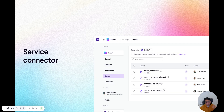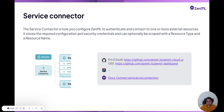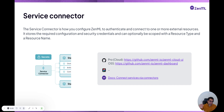Building on top of secrets is one of the more complicated concepts of ZML: the service connector. We talked about stack components and stacks. Often, most of the configuration of these components are secrets in themselves. Imagine you have an AWS SageMaker orchestrator that needs to communicate with SageMaker through a certain service account.